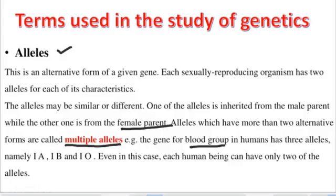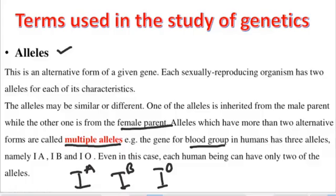Blood groups in humans have three alleles: the allele for blood group A, the allele for blood group B, and the allele for blood group O. When expressing the blood group, an organism will have only two of these alleles. We use letters to represent these alleles.